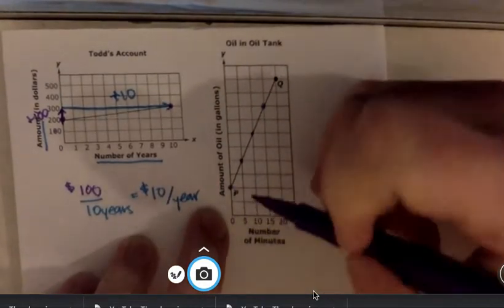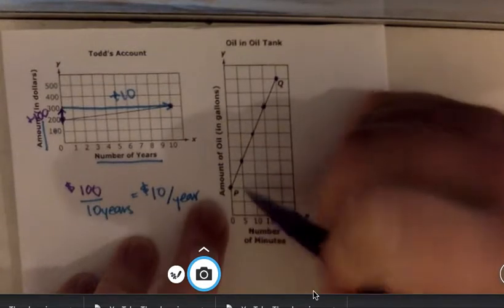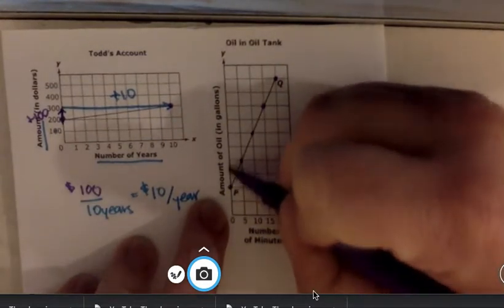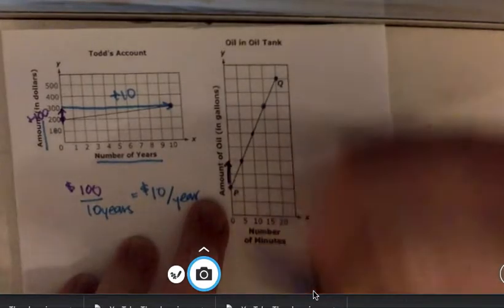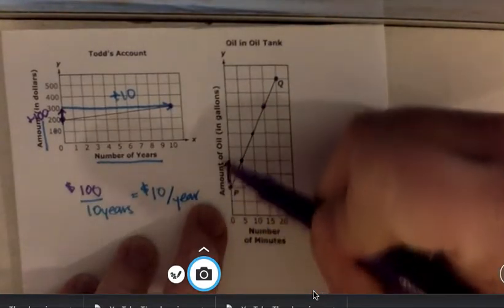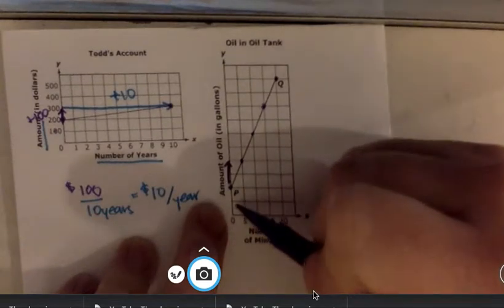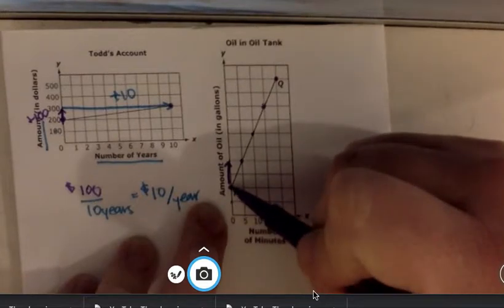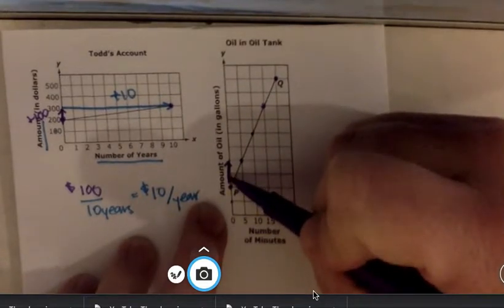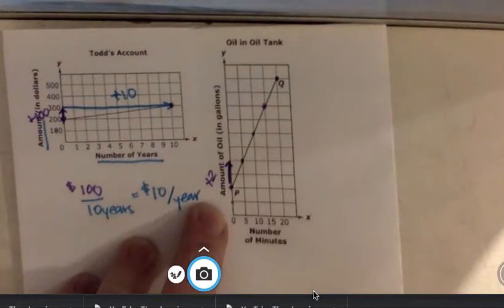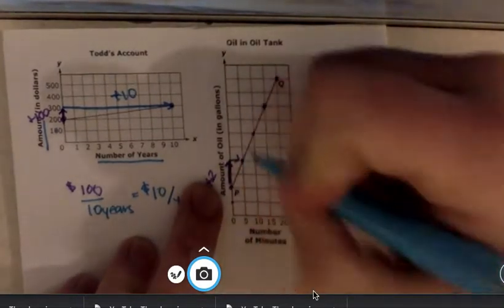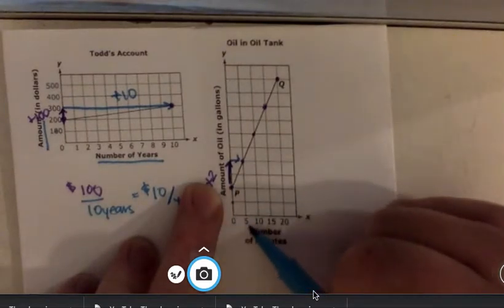So I'm going to look at these nice points that are along here, and I'm just going to pick this first one, my rise. It looks like this is the amount of oil in gallons, so I'm going to assume, because it's not written down, that each one of these lines is one gallon, two gallons. So that means we're going to go up by two gallons, and we are running five minutes.